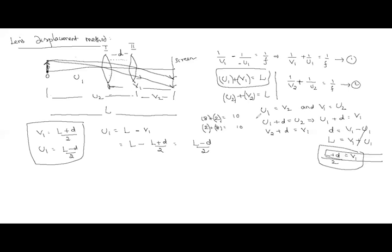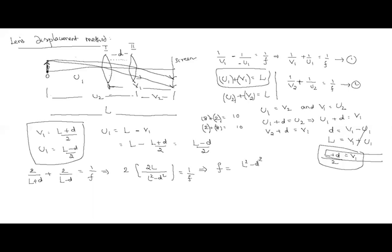Substituting V1 = (L+D)/2 and U1 = (L-D)/2 into the lens formula 1/V1 + 1/U1 = 1/F: we get 2/(L+D) + 2/(L-D) = 1/F, which simplifies to F = (L² - D²) / 4L.